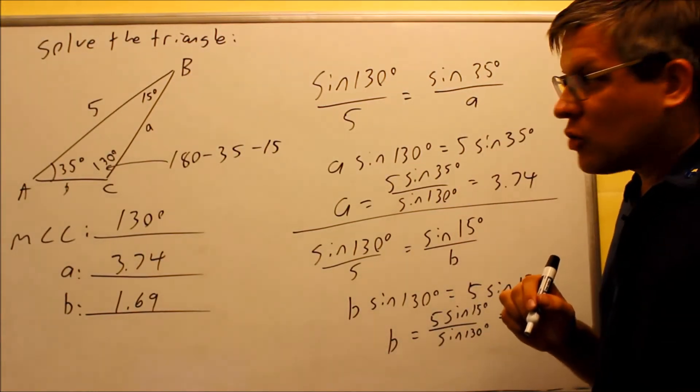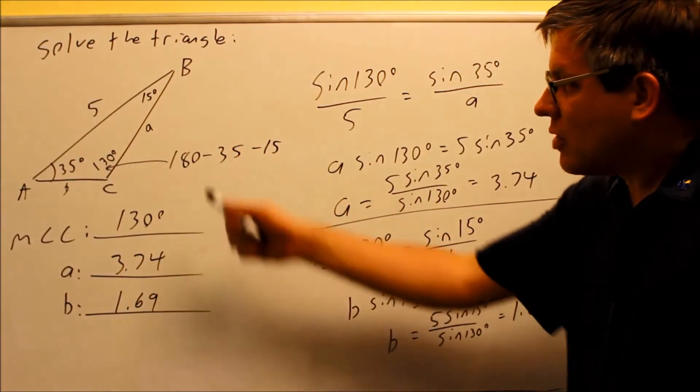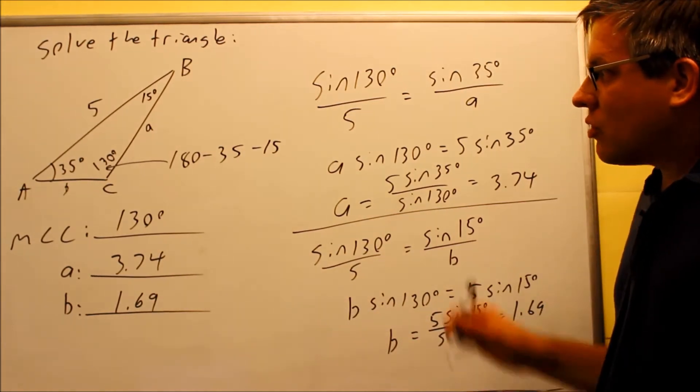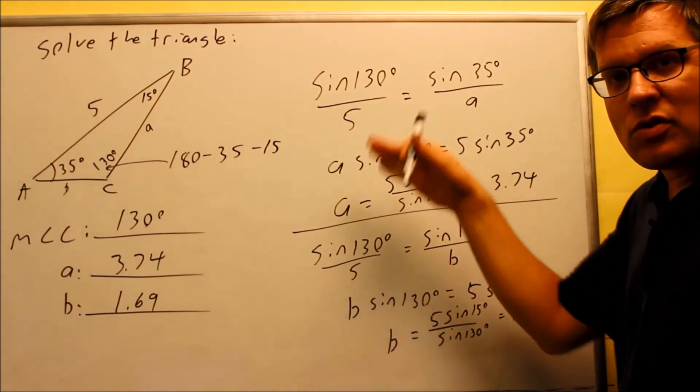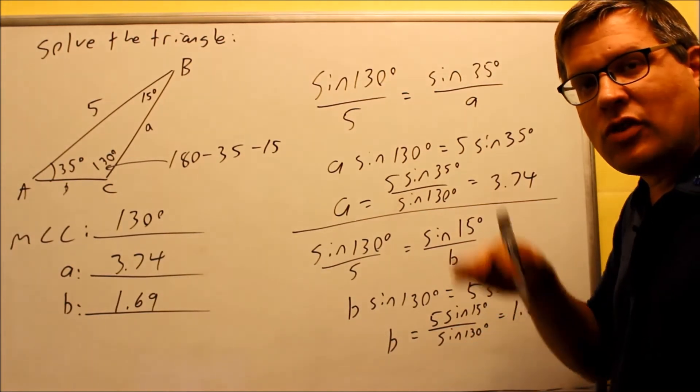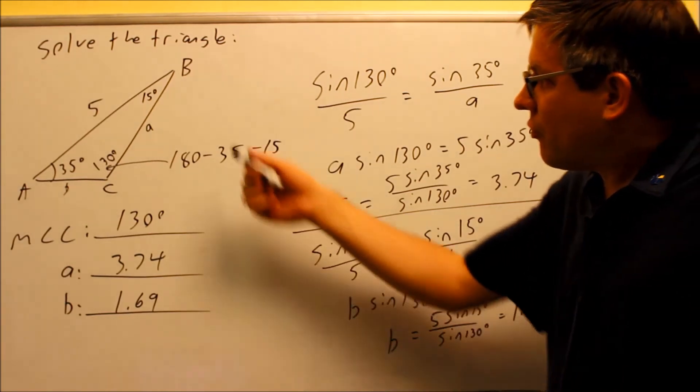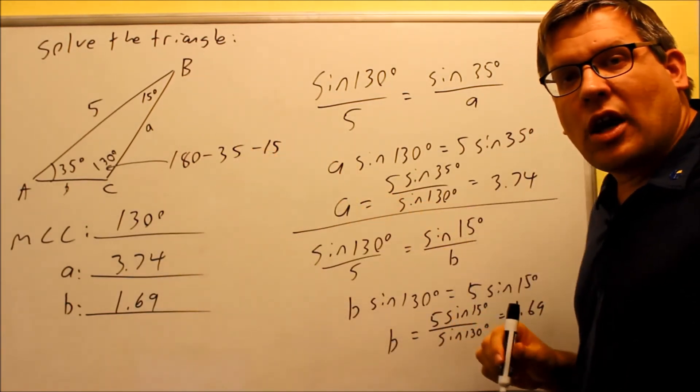We've solved the triangle because we found all the missing information. We found the missing angle and we found the two sides. So basically the first two examples I've done so far with these videos, I've done one where I have two angles that are given and we're solving for a third angle and two sides.